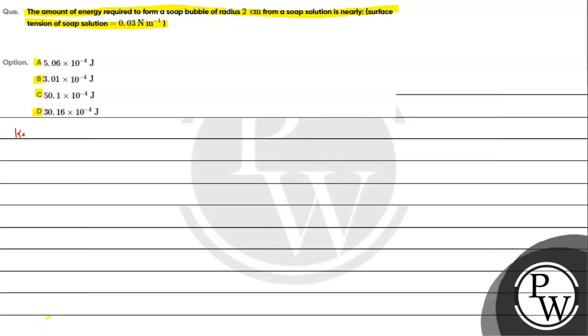For this question, the key concept we need to understand is surface energy, which we denote as E. Surface energy is the energy possessed by molecules on the free surface of a liquid. The relation between surface energy and surface tension is given by E = T × A, where T is surface tension and A is the area.